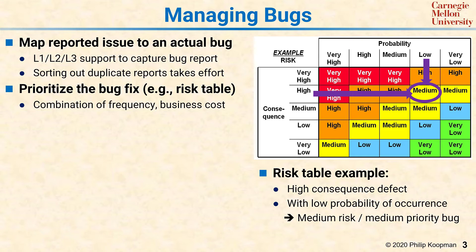The importance of using this table is that some teams just rate bugs based on the consequence — it crashes the system, therefore we have to fix it — but it doesn't necessarily look at the context. For example, if a system only crashes when a maintenance technician is doing a very obscure maintenance operation, and the crash is easily recovered and takes maybe 10 seconds to deal with, maybe that's not so bad compared to a crash that happens to ordinary users during production operation. On the other hand, you may have a consequence that's moderately low, such as a misspelling, but it may happen all the time and really annoy users. It could be that that misspelling is a higher risk to the company's success than the crash, depending on the circumstances.